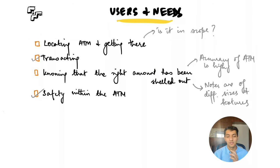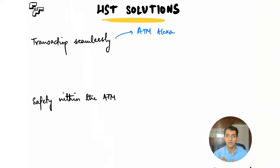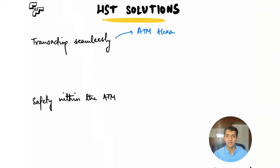Having prioritized two needs — seamless transactions and safety — I brainstorm solutions. For seamless transactions, the first solution is an AI voice assistant, like an Alexa for an ATM. The visually impaired person simply speaks to it: 'I want to check my account balance' or 'I want to extract one thousand rupees,' and the assistant understands and performs the action. This removes the need to operate the keypad at all, using only voice to interact with the machine.